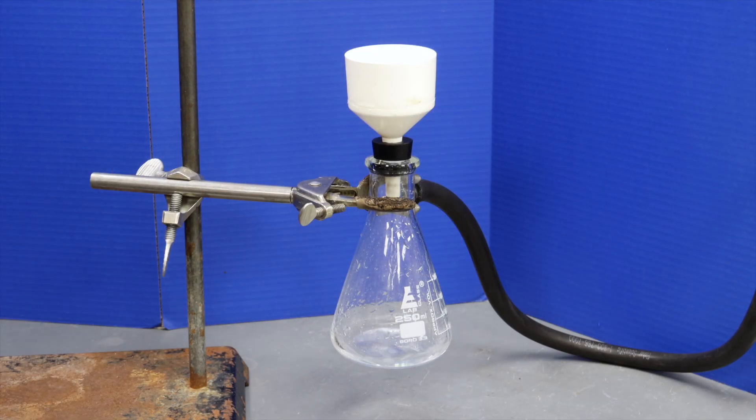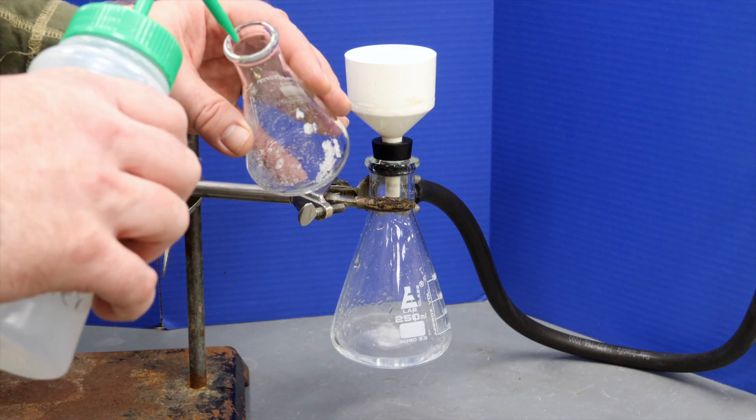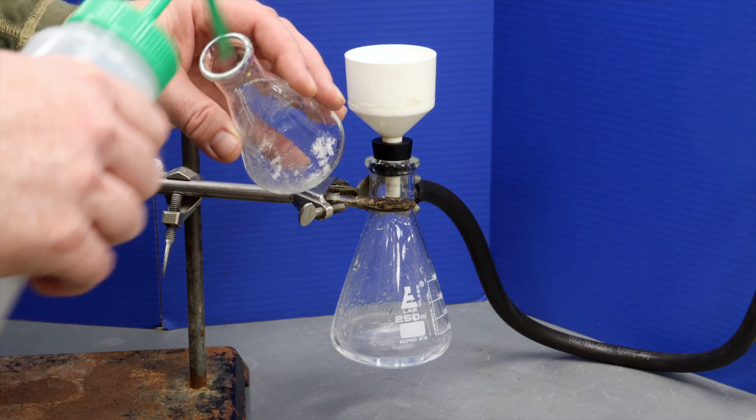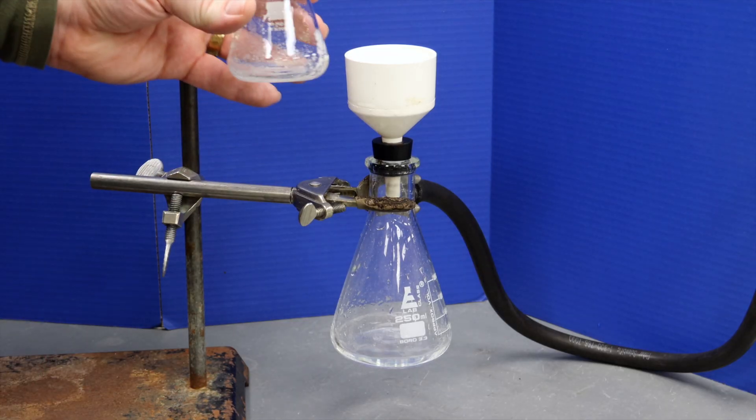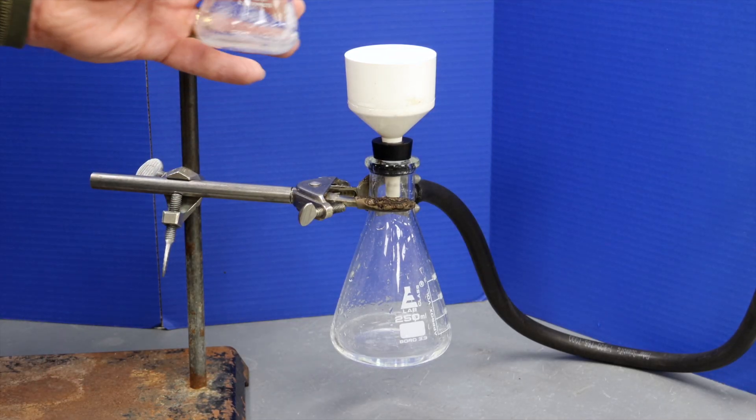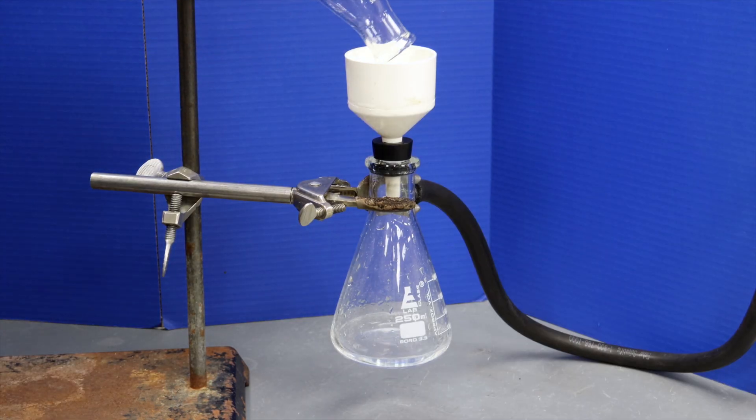It is not uncommon for some of your solid to remain in the flask that you poured from. How you deal with this depends on how soluble your compound is in the solvent. If it's not soluble, you can simply add a bit of that solvent into the flask and pour it through the Buechner funnel.